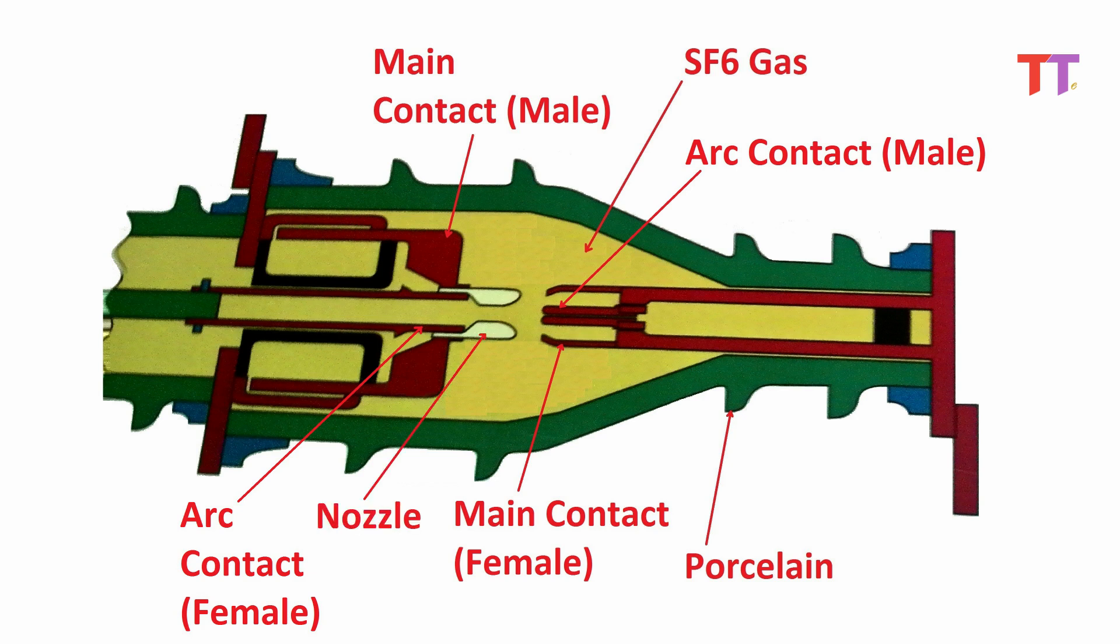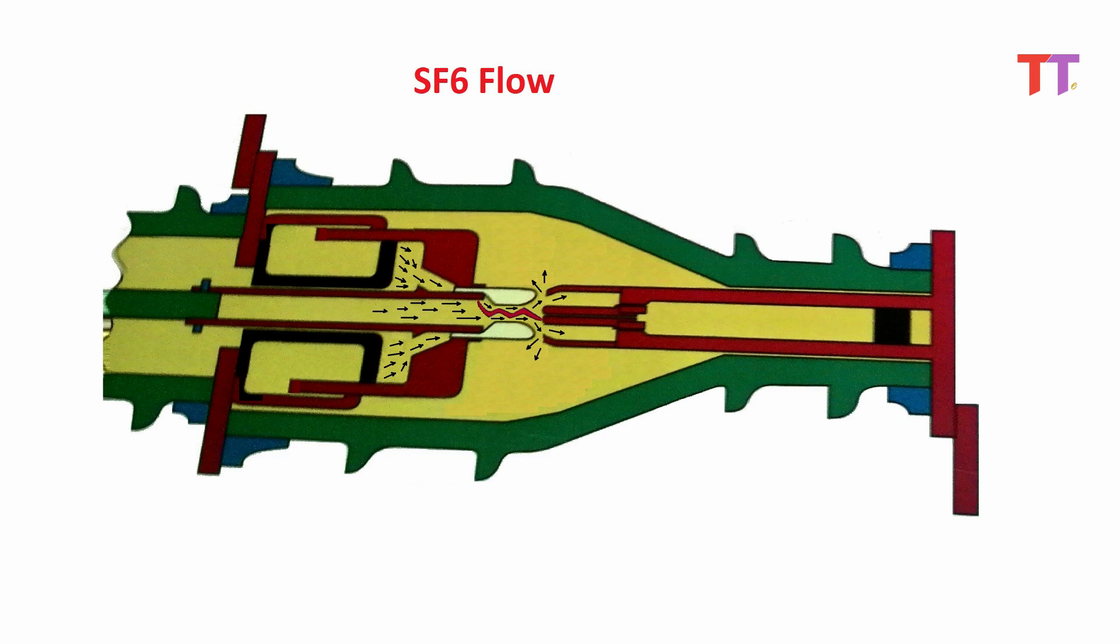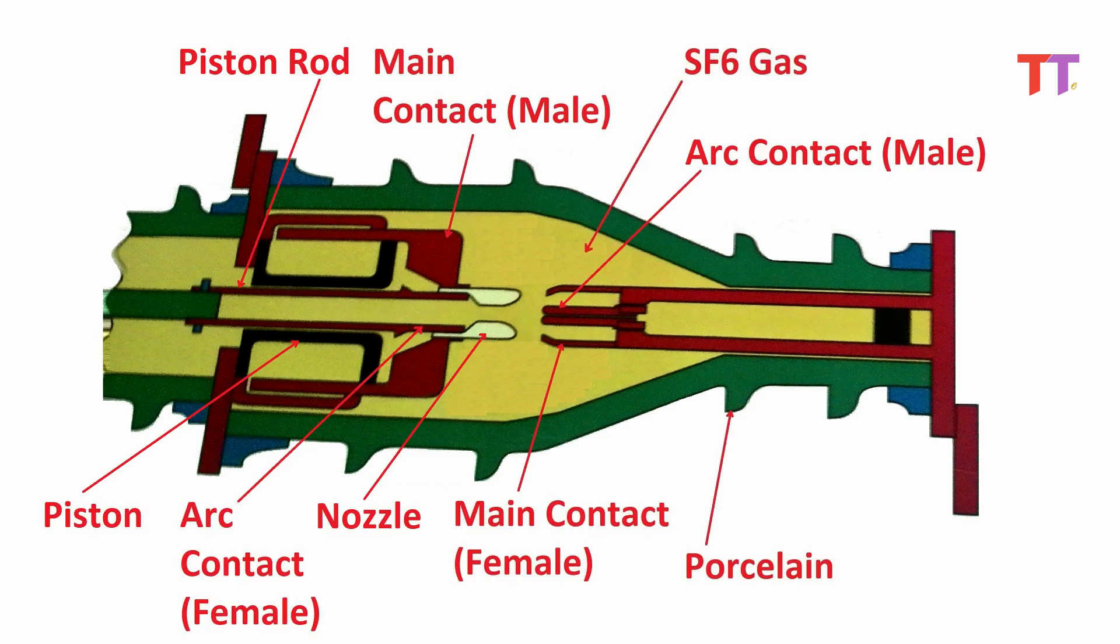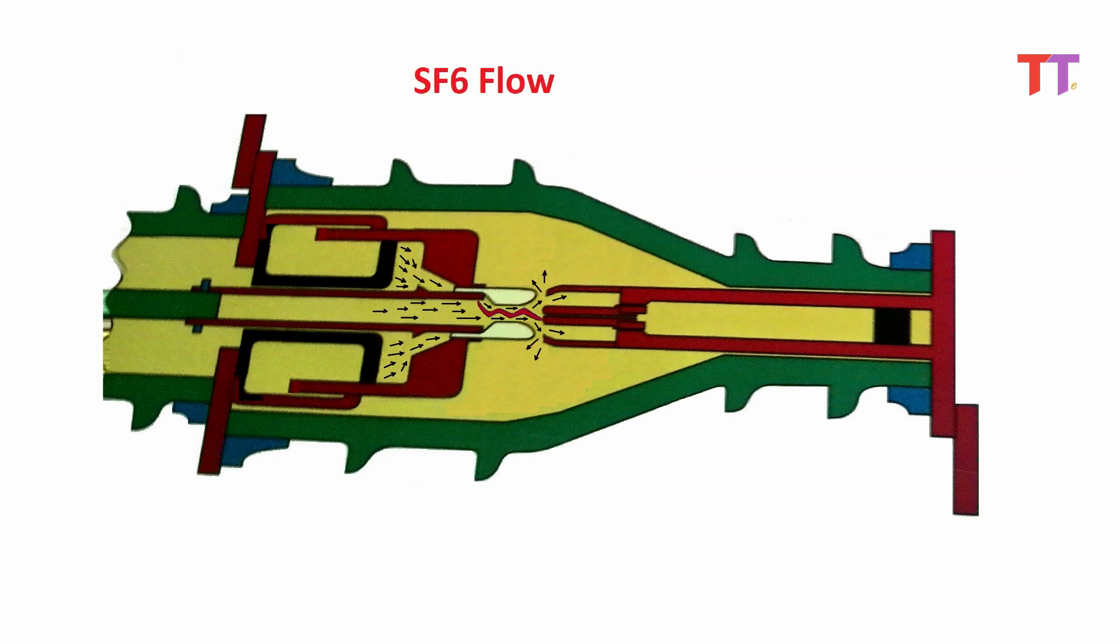This is nozzle which is made of non-metallic insulating material. Function of the nozzle is to direct SF6 flow towards arcing region to accelerate arc quenching. These are pistons and this is piston rod. Pistons are used to push SF6 to blow it on arc for effective arc quenching.